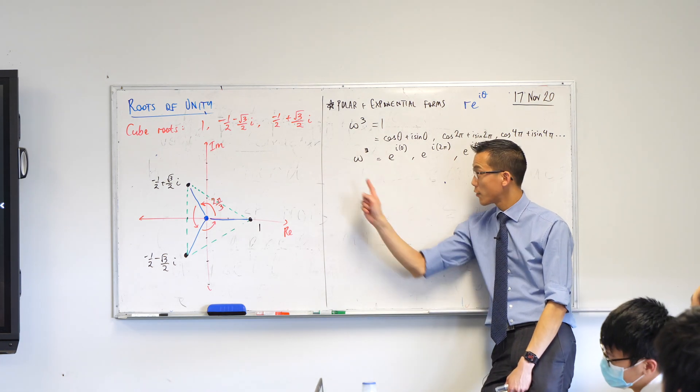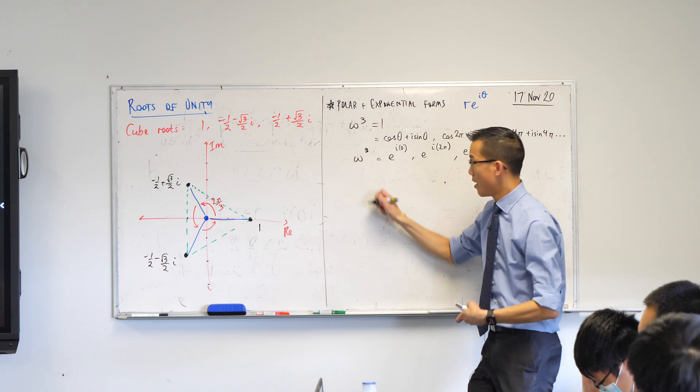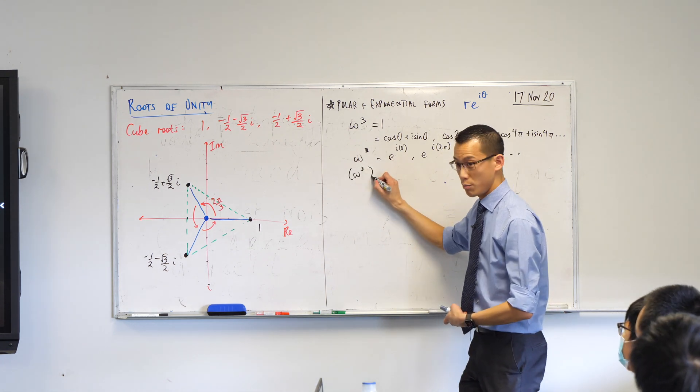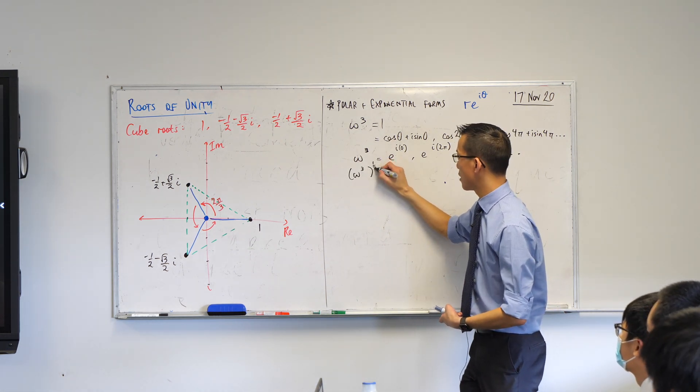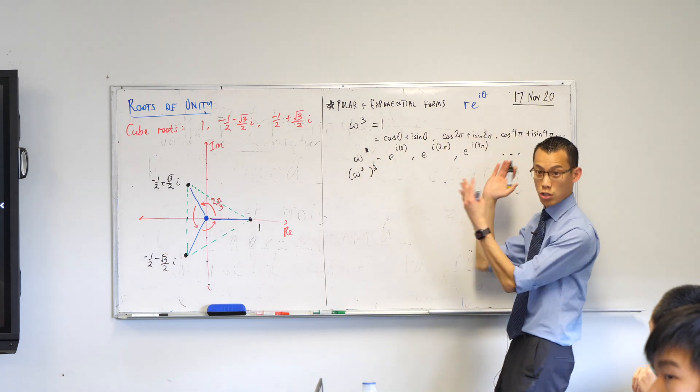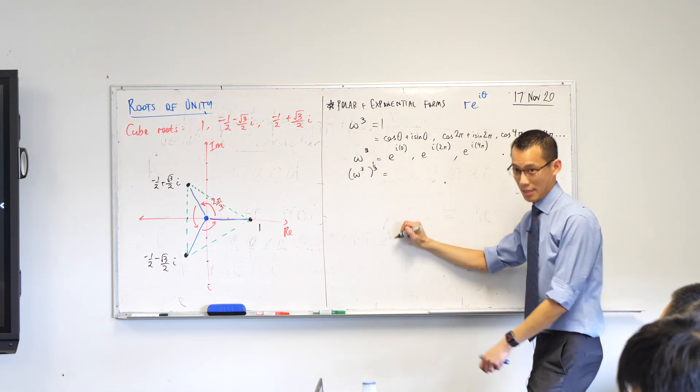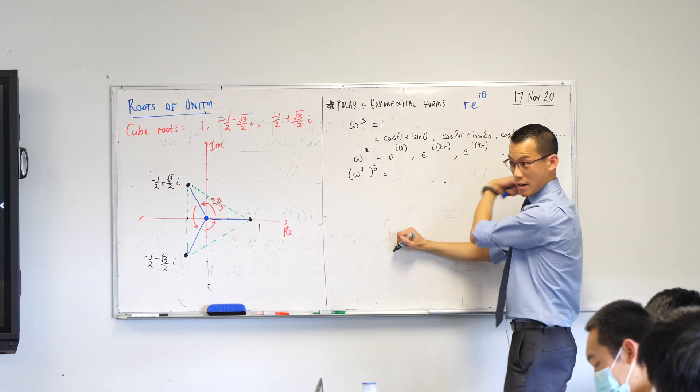It should be a third. Because if I raise omega cubed to the power of a third, by index laws, 3 times a third just gives me 1. This will just be omega. Well, you can't just do it to the left-hand side, you've got to do it to the right-hand side.